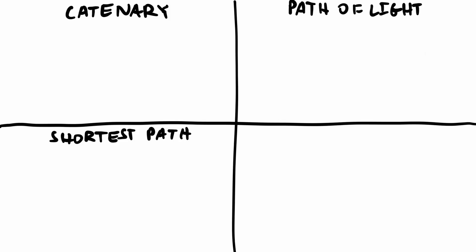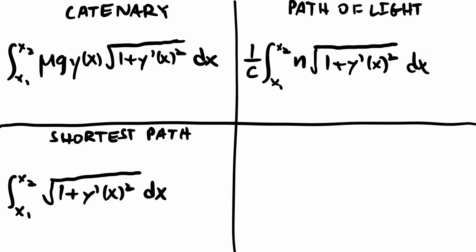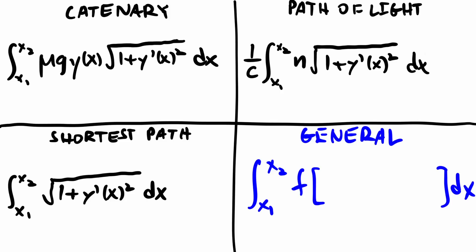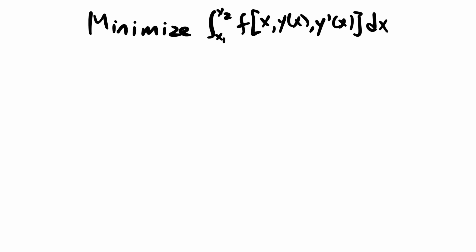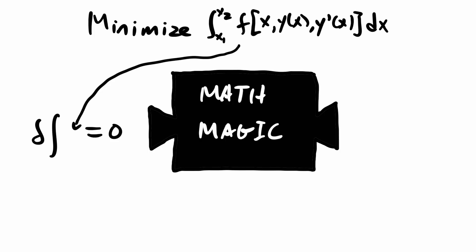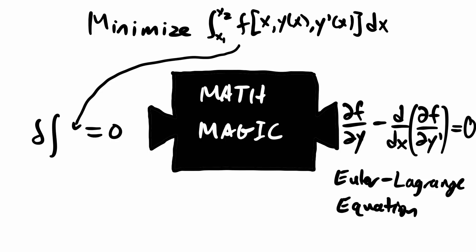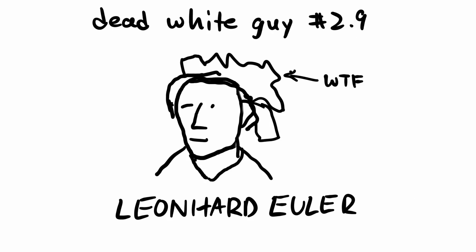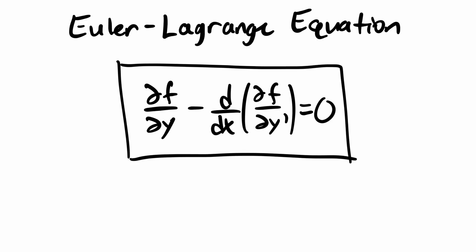Recall the beginning of the video where we looked at examples of problems requiring finding some kind of optimal path. They all require the integrals of some functional to be minimized. The functional inside this integral depends on three things: a variable, some function of that variable — which is what we want to find — and the derivative of that function. For this specific case, it turns out that requiring the variation of this integral to be zero reduces to a differential equation called the Euler-Lagrange equation. Yeah, Euler was involved with this. Any function that minimizes the integral must satisfy the Euler-Lagrange equation, and solving it will give us our desired function. This is the most important equation in Lagrangian mechanics.